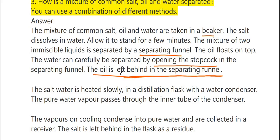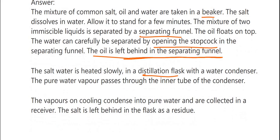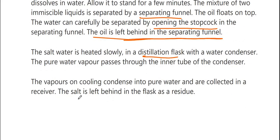The oil is separated first using the separating funnel technique. The water layer drains out carefully. Then, the remaining salt water is heated slowly in a distillation flask with a water condenser. The pure water vapor passes through the inner tube of the condenser, condenses into pure water, and is collected in a receiver. The salt is left behind in the flask as a residue. Thus, all three components — oil, water, and salt — are separated.